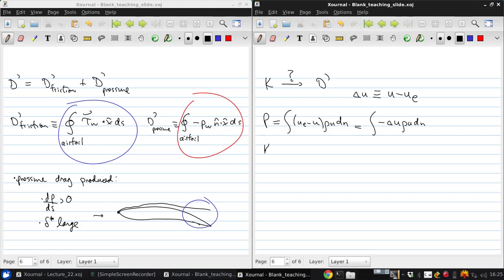And K is the integral of one-half UE squared minus U squared, rho U dn. We can write that as negative delta U times UE plus one-half delta U, rho U dn.